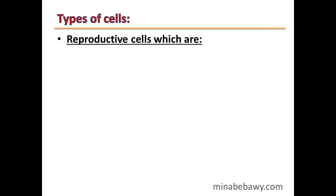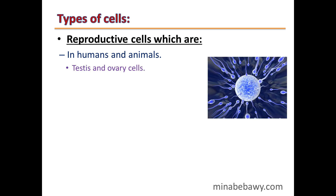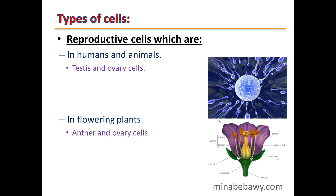The second type of cells is reproductive cells. In humans and animals, the cells of the testes and ovary are reproductive cells. In flowering plants, the anther — which is the male reproductive organ — and the ovary — which is the female reproductive organ — are formed from reproductive cells. So we have two types of cells: somatic cells and reproductive cells.